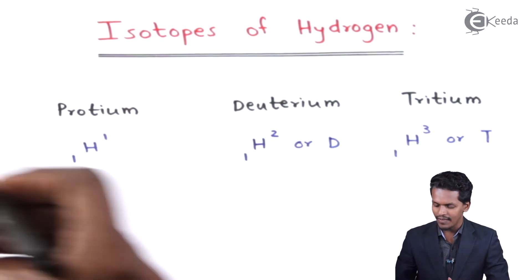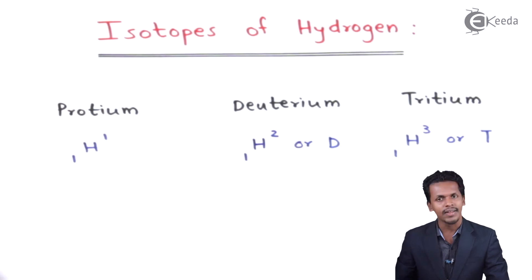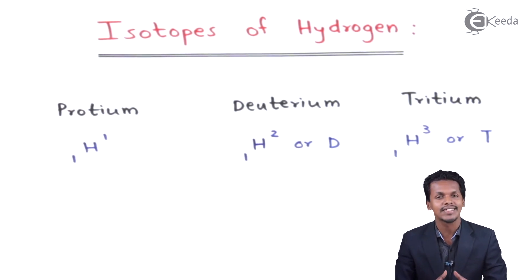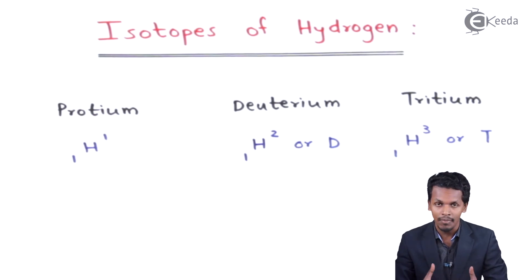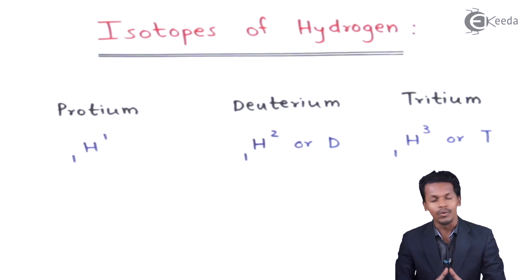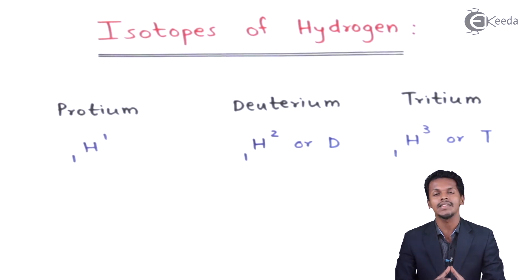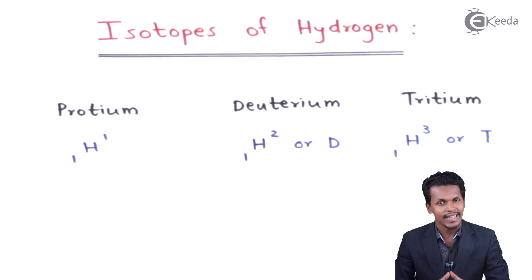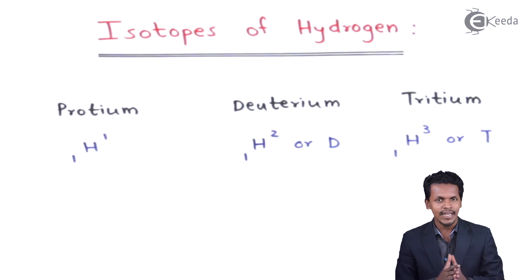All three isotopes have the same atomic number. Since the periodic table is a periodic function of atomic number, all three have only one electron in their outer shell, and that is why they share the same kind of chemical properties — though there are also certain differences.